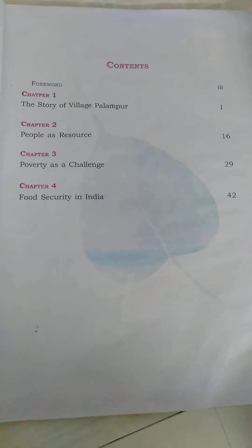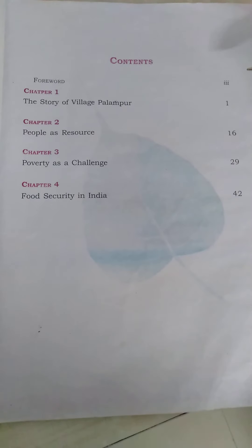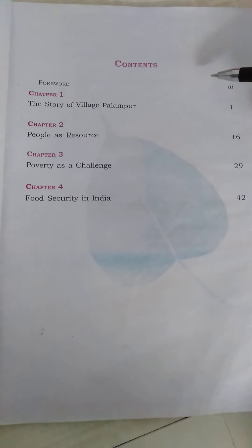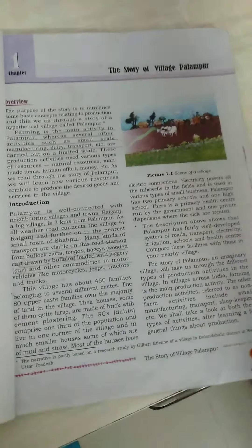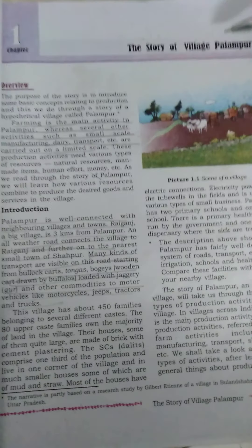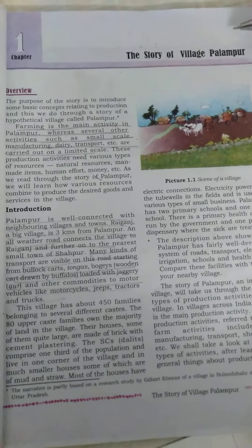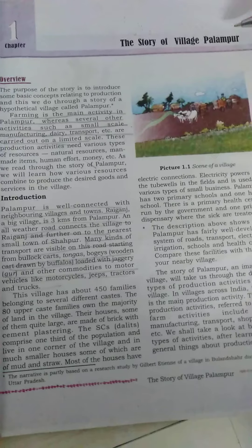Good morning students. Let me show you the chapters once again. The book has four chapters: Chapter 1 - The Story of Village Palampur, Chapter 2 - People as a Resource, Chapter 3 - Poverty as a Challenge, and Chapter 4 - Food Security in India. As I said in my previous video, we will be starting with Chapter 1, that is The Story of Village Palampur.